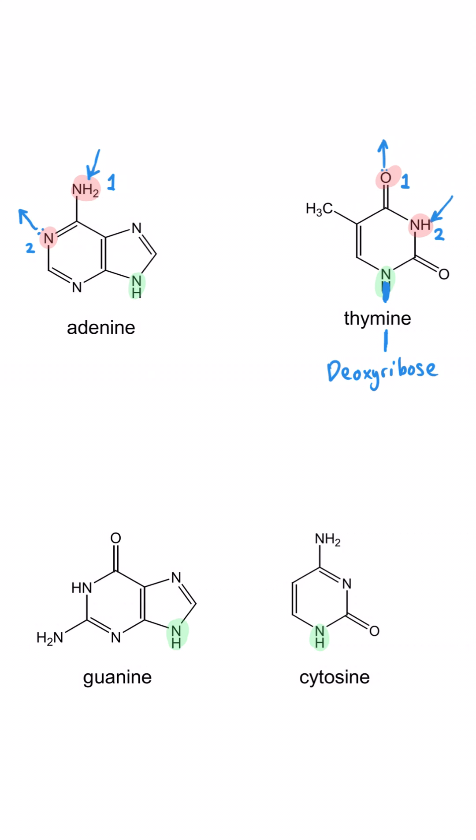And then we get the same thing with the guanine to cytosine, only this time we've got a different number of hydrogen bonds. We've got a hydrogen bond forming from this NH2 to this oxygen. And then we've got another one forming from this NH to this nitrogen. And then we've got another one forming from this oxygen to this NH2, giving us a total of three hydrogen bonds between these two base pairs.